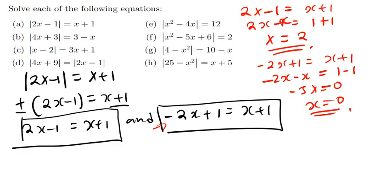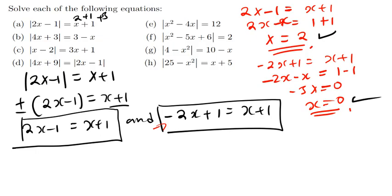Now look at the answers we found. When you take them back, especially the part that doesn't have the modulus, it should give us a positive value. If you plug in a value and it gives you negative, we call it an extraneous solution — it's not part of the answer. If I put x=2 into x plus 1, I get positive 3 — that's okay. If I put x=0, I get 1 — also okay. So both x=2 and x=0 are valid solutions.